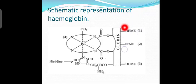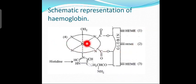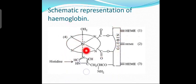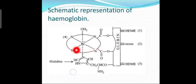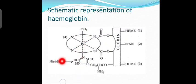The schematic representation of hemoglobin shows four heme groups. Iron(2+) is bonded to four nitrogen atoms of the pyrrole rings. On one side, iron is weakly bonded to water (OH2), and on the other side it is weakly bonded to a histidine residue, which is part of the long polypeptide (globin) chain.